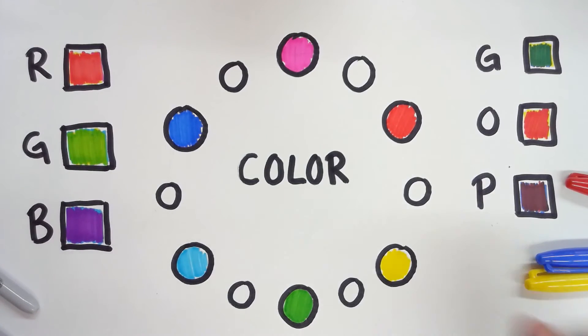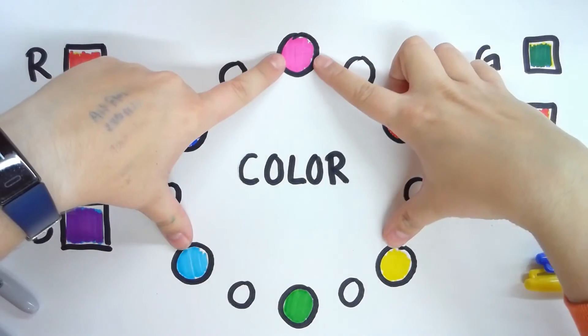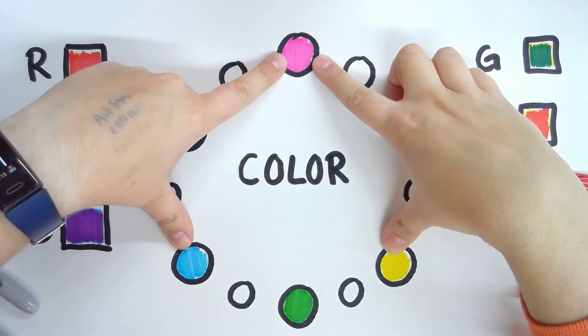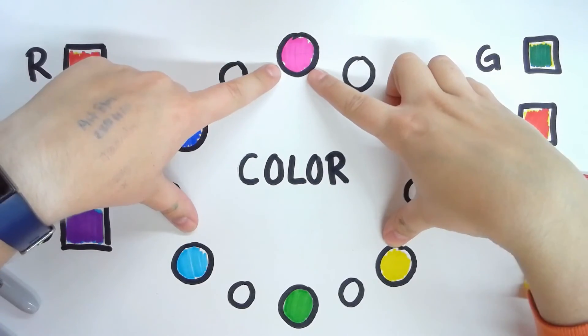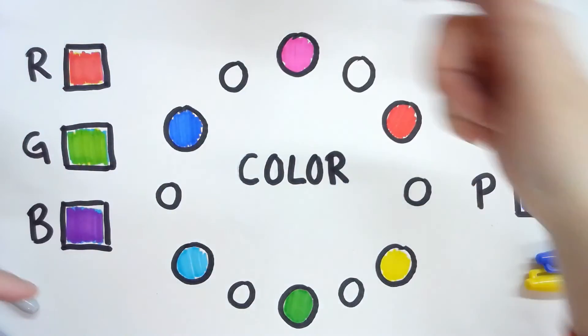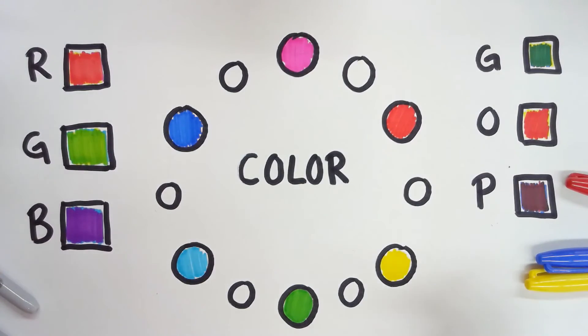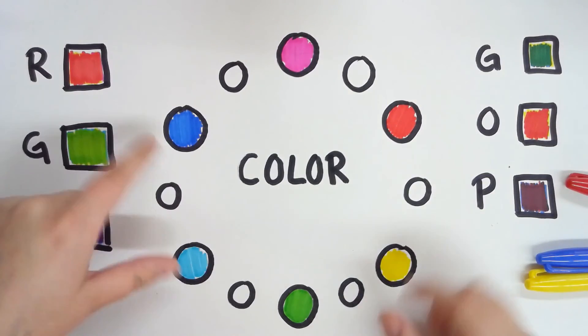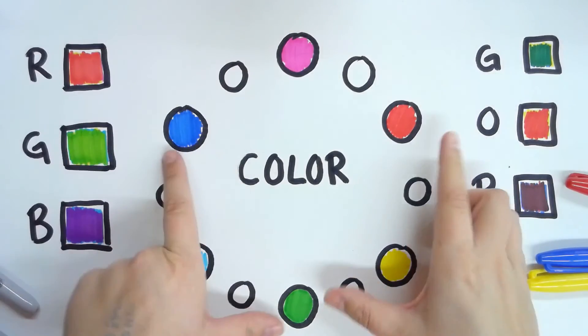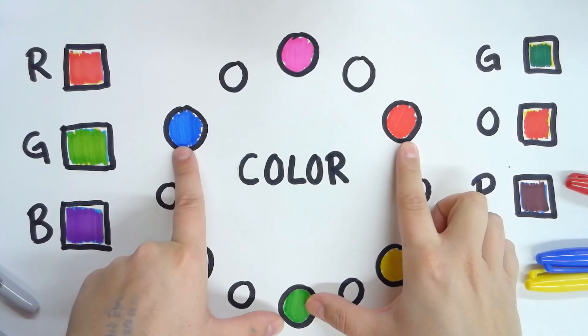So this third type of color, we have the primaries right here that you can't make. You can't mix them to get either of these. These just are. I can't mix together colors to get magenta, cyan, or yellow. But I can mix together two to get red, blue, and green. So primary colors, secondary colors, because you use two primary colors to make them.